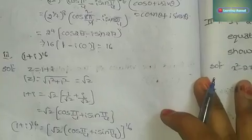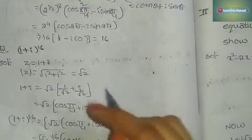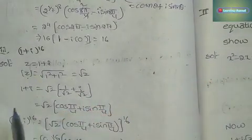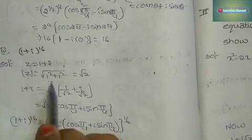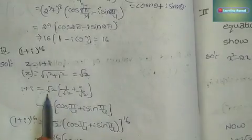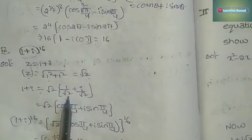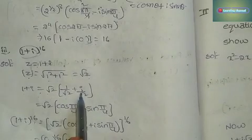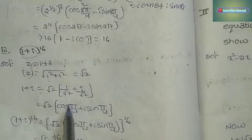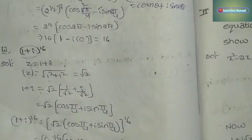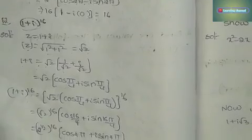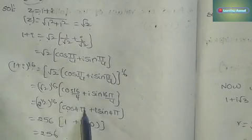For the third problem, do the same: z = 1+i, so z value is √2. Multiply and divide by √2, getting 1/√2 + i·1/√2. Convert to cos and sin, apply power 16, and solve using De Moivre's Theorem. We get 256 × cos(4π) = 256 × 1, and sin(4π) = 0, so the answer is 256.